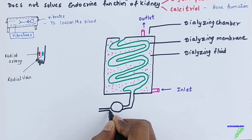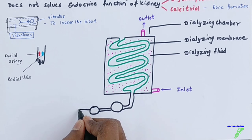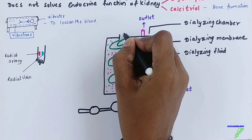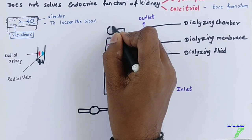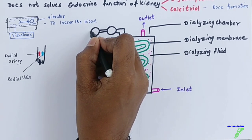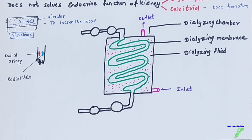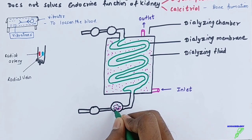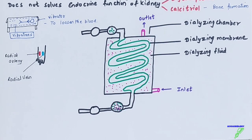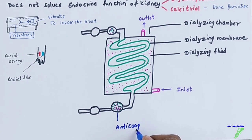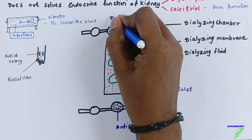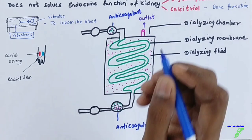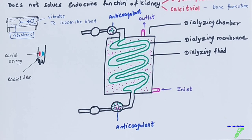There is also an anti-coagulant chamber where anti-coagulants are added, because when blood contacts air it will coagulate. The anti-coagulant used can be heparin, which prevents clotting of the blood. Anti-coagulant is added when blood is drawn from the radial artery and again when it is transferred back into the body via the radial vein.